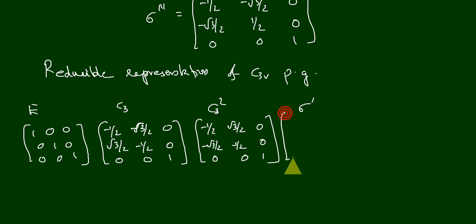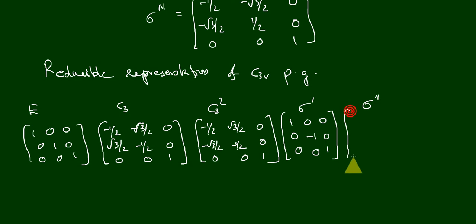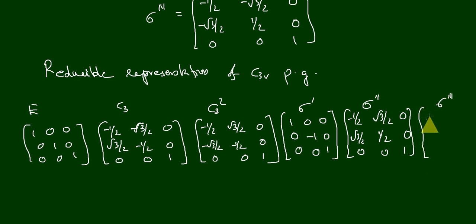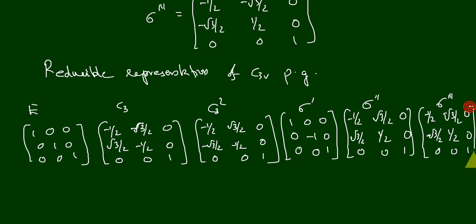Sigma dash is [1, 0, 0; 0, −1, 0; 0, 0, 1]. Sigma double dash is [−1/2, √3/2, 0; √3/2, 1/2, 0; 0, 0, 1]. Sigma triple dash is [−1/2, −√3/2, 0; −√3/2, 1/2, 0; 0, 0, 1].